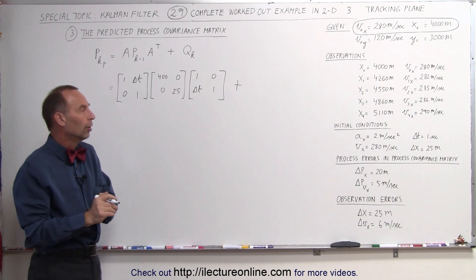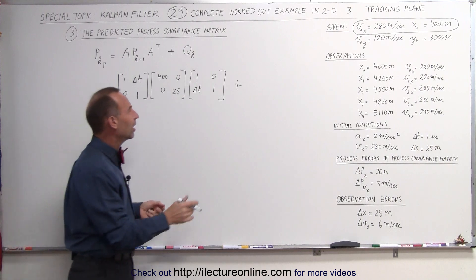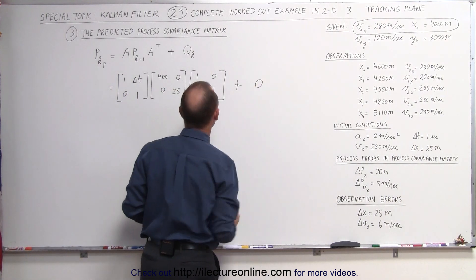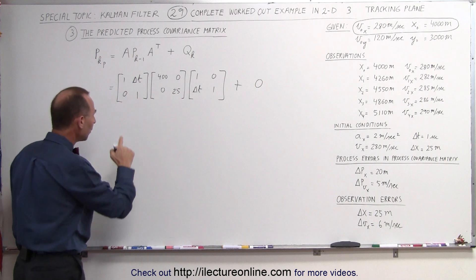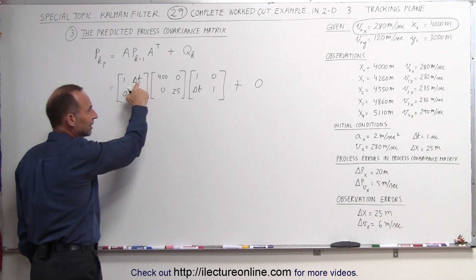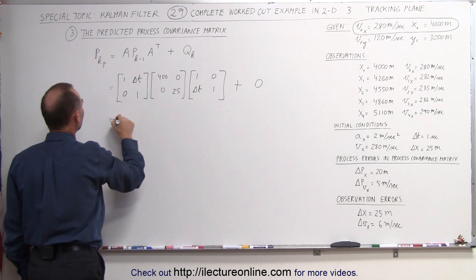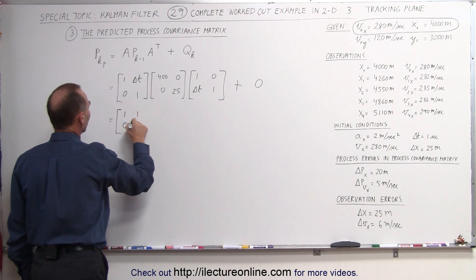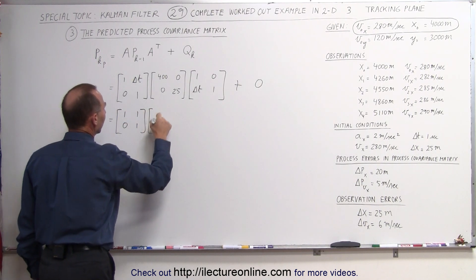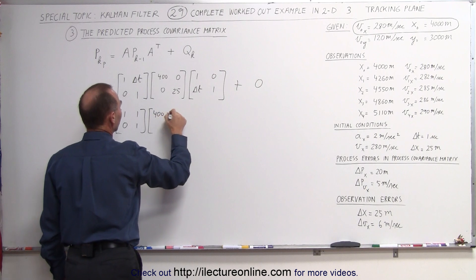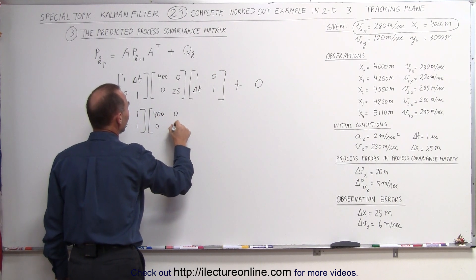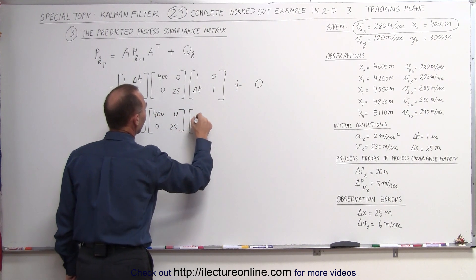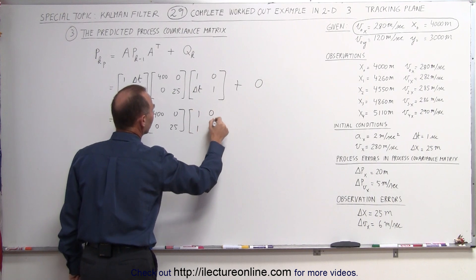Plus the error in the process of calculating the process covariance matrix. In this case, we're going to call that 0. Sometimes it's not 0, but in this case, we'll just call this 0 to make things a little simpler. Now when we substitute for delta T, that's equal to 1 second, this matrix becomes 1, 1, 0, 1, multiply times 400, 0, 0, 25, and then multiply times 1, 1, 0, 1 in this format.